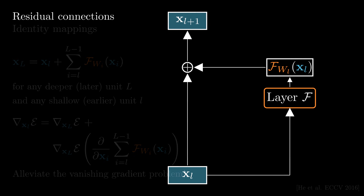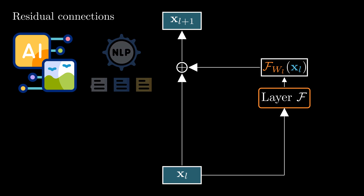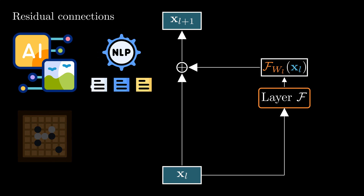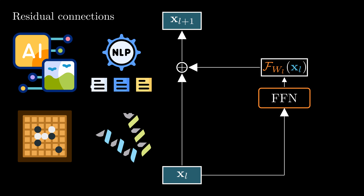The residual connection design can be found everywhere, including models that understand images, language, play Go, and predict proteins' 3D structures. It can be applied in virtually any type of layer like convolutional networks, attention, and multilayer perceptrons. But this design is somewhat restricted, as there is only one residual path.